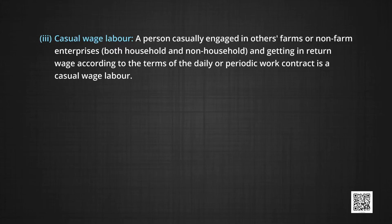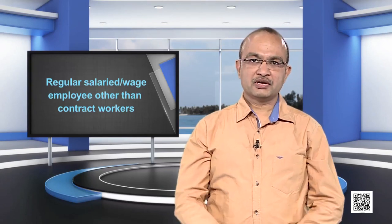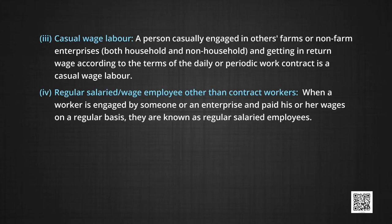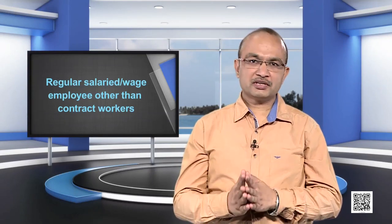Now we come to casual wage labor. A person casually engaged in other farm or non-farm enterprises — which includes the household as well as non-household sector — and getting in return wages according to the terms of the daily or periodic work contract, is a casual wage laborer. An example of a casual worker is a construction worker. Construction workers account for 30 percent of India's workforce. Next is the category of regular salaried or wage employees. When a worker is engaged by someone or an enterprise and paid wages on a regular basis, they are known as regular salaried employees. An example of a regular salaried worker is a civil engineer working in a construction company.